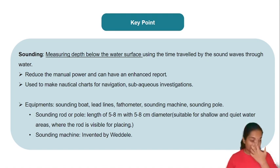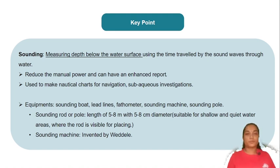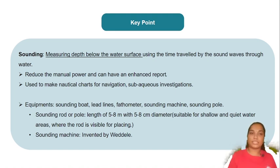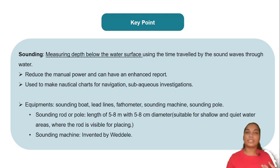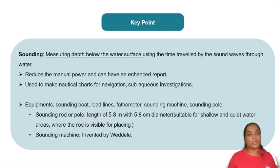Equipment used for sounding includes sounding boards, lead lines, bathometer, sounding machines, and sounding poles. Sounding poles are 5 to 8 meters in length and 5 to 8 centimeters in diameter. They are clear and visible, used in water bodies and measured in meters. Sounding machines are used for greater depths.